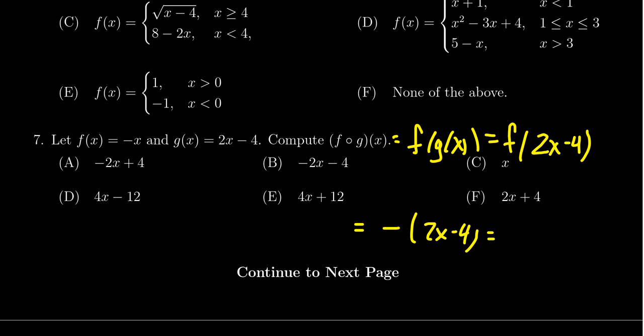Distributing that negative sign, we end up with a negative 2x plus 4, which then would be the composition of the two functions. So we see that choice A is in fact the composite of f and g.